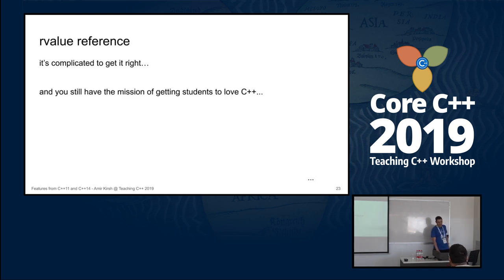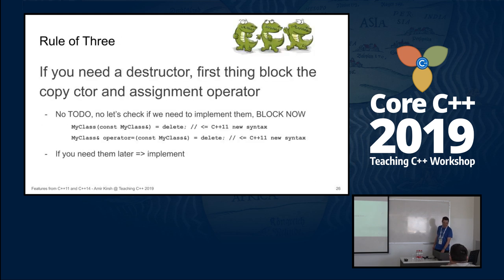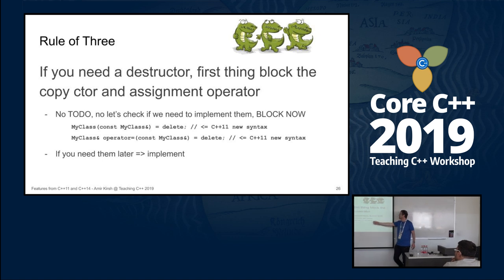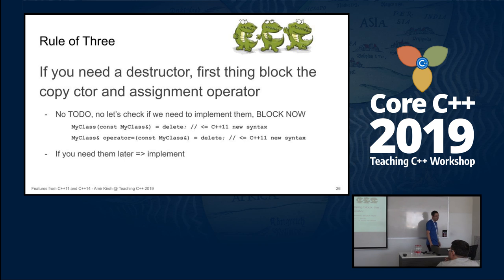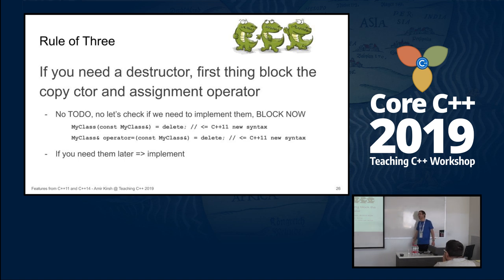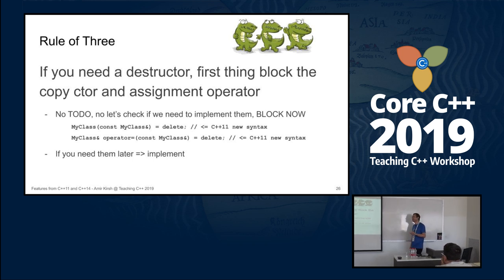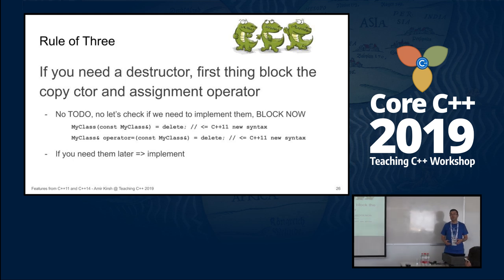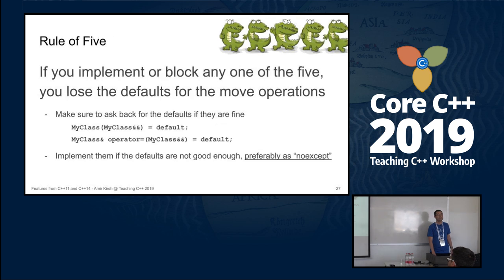You still have the mission to get students to love C++. No wonder it takes only the crazy ones who come to conferences like this. Then you go to the rule of three — which started with C++98 — but it changed: now you can do `= delete`. So they understand that if your class has a destructor or manages resources, the first thing you must do is block the copy constructor and assignment operator. They're actually happy because in exercises they're allowed to block them.